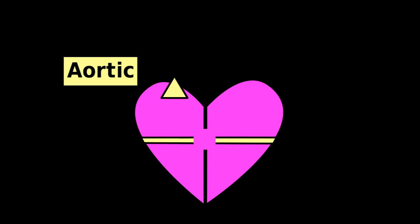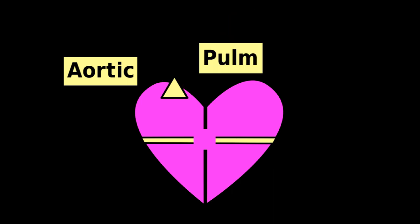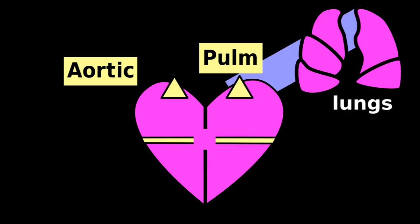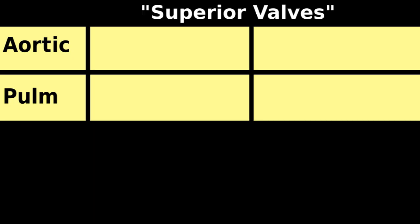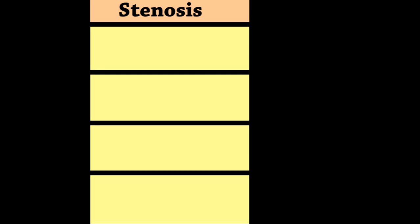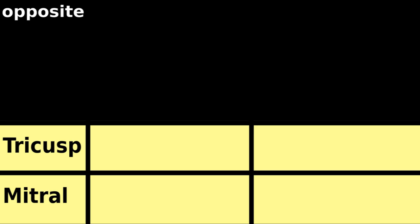The aortic valve is the last heart valve before blood gets pushed far to the head. The pulmonic valve is the last heart valve before blood gets pushed far through the lungs. These are the superior valves. These groupings help because stenosis is like the opposite of regurgitation, and the superior valves are like the opposite of the bottom valves.